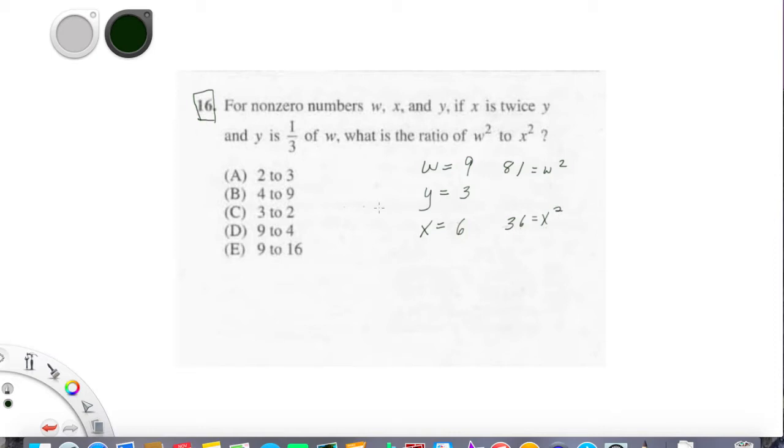Now, obviously, they don't give us answers that are w squared to x squared, 81 to 36. They do not give us that for answers. But there is a common factor here. We could divide both of these by 9. So 81 divided by 9 gives me another 9. 36 divided by 9 gives me 4.